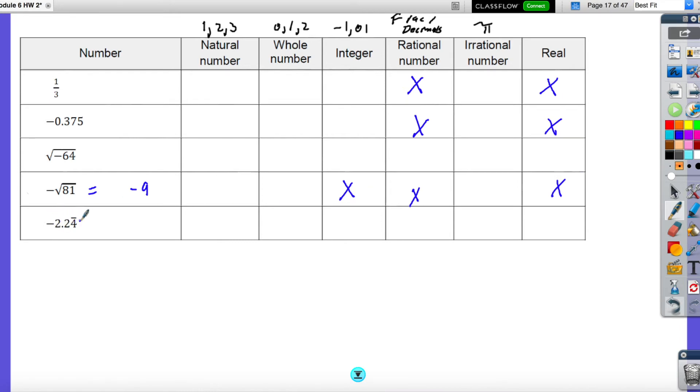Here I have a decimal that goes on forever. But the same number repeats. So therefore, that is a rational number and a real number. Let's say I give you a number like 7. That would also be a natural, whole, integer, rational, real. So hopefully that helps.